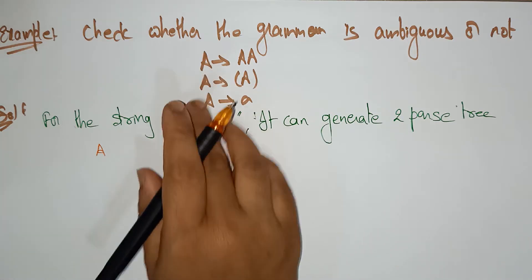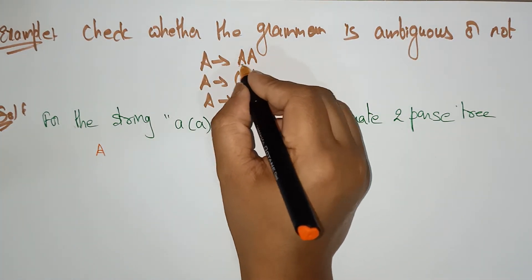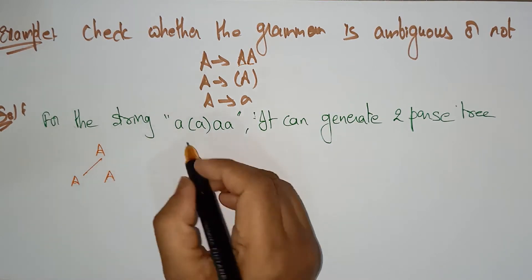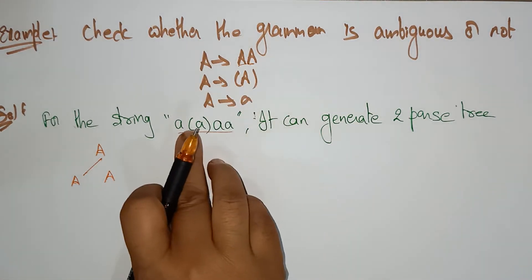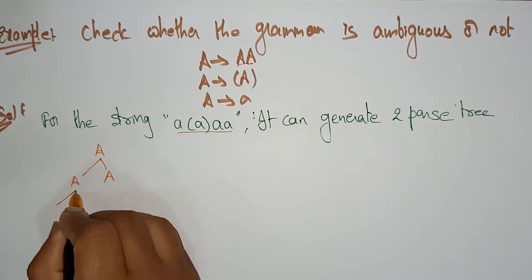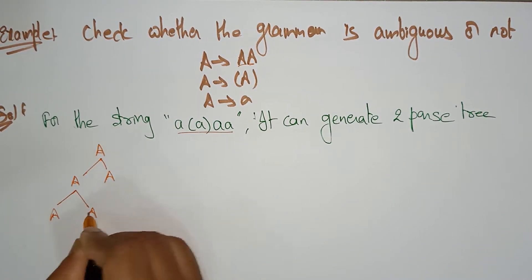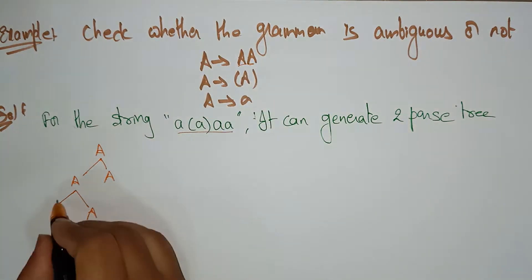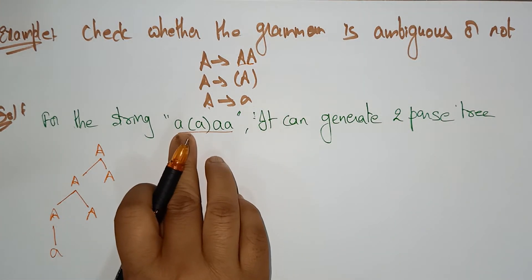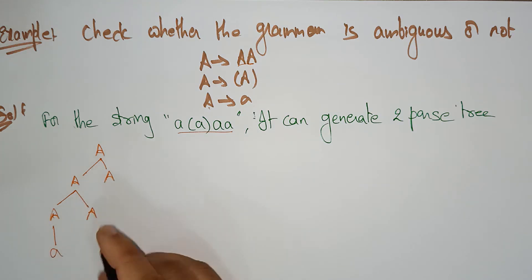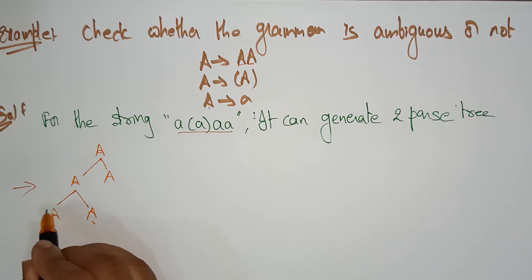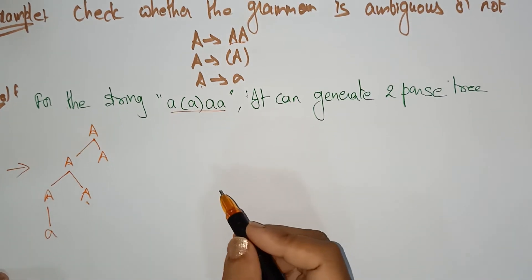First, take the start symbol A. Here A is the start symbol, so A is substituted with A A. We have to check this string. Here again, this A I am substituting with A A, and in place of A I am writing small a. This is a leftmost derivation — the first non-terminal is resolved first.